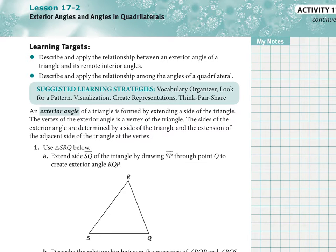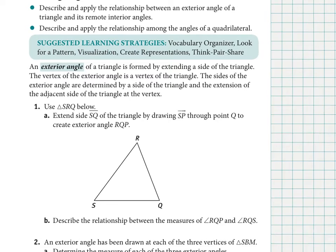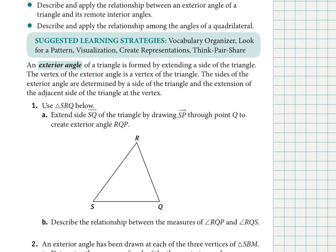So exterior angles and then angles in quadrilaterals. Let's start with a definition. If we have a triangle — SRQ is a triangle — an exterior angle of a triangle is formed by extending a side of the triangle. The vertex of the exterior angle is a vertex of the triangle. In a figure, the points where the sides meet are called vertices — that's the plural for vertex.